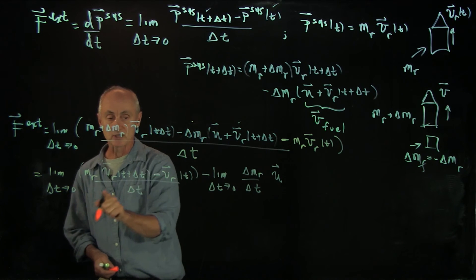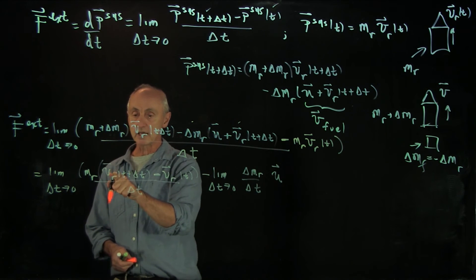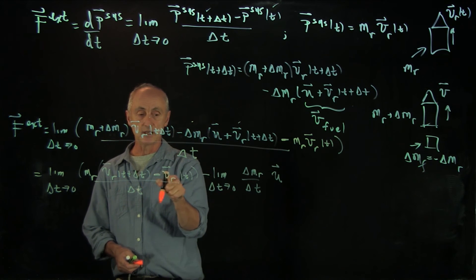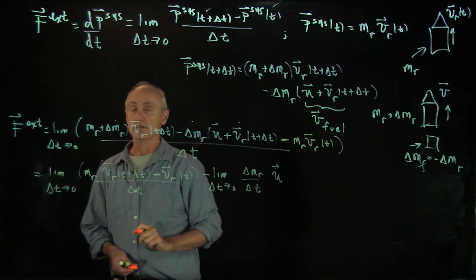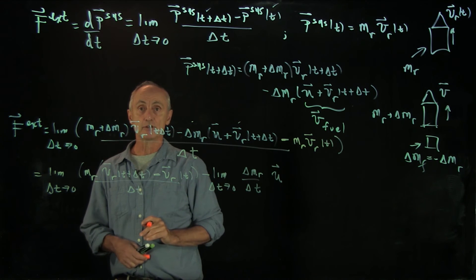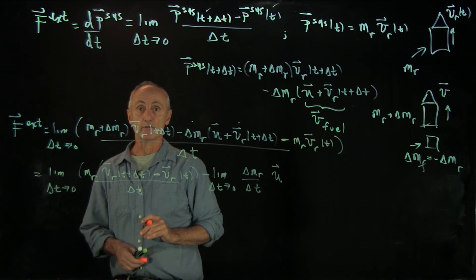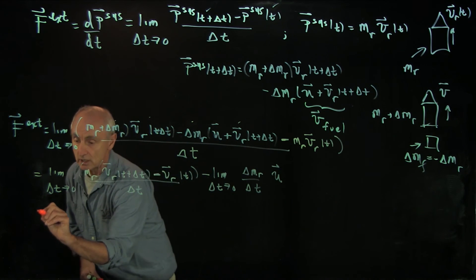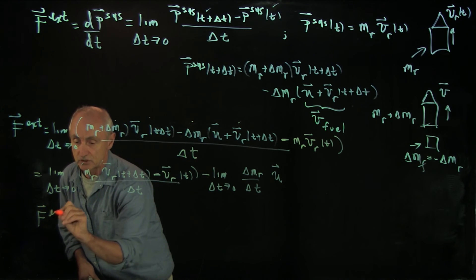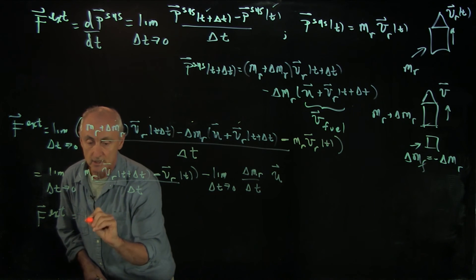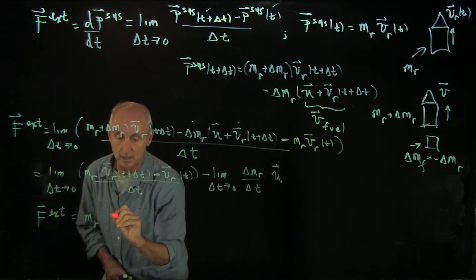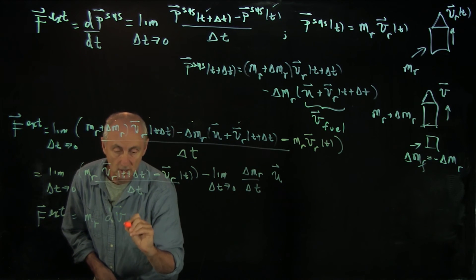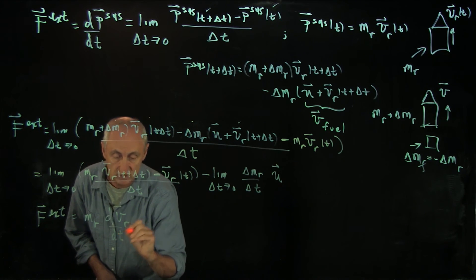Let's look at these limits. Notice in here, we're just taking v of r of t plus delta t minus v of r of t divided by delta t. And that's precisely the definition of the derivative of the velocity of the rocket. So this first term becomes the external force is equal to the mass of our system times the derivative of the velocity of the rocket.